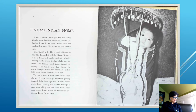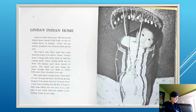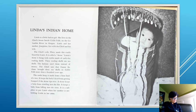'It is a story of Indian faces — faces filled with goodness and kindness and love.' Linda is a little Indian girl. She lives in the chief's house beside Celilo Falls on the Columbia River in Oregon. Linda and her mother Josephine live with the chief and his wife. The chief's wife, Flora, made this cradle board for Linda. It's called a skein. Linda's skein is hung with rattles made of early-day trading shells. These trading shells are seashells; the Indians use them instead of money.